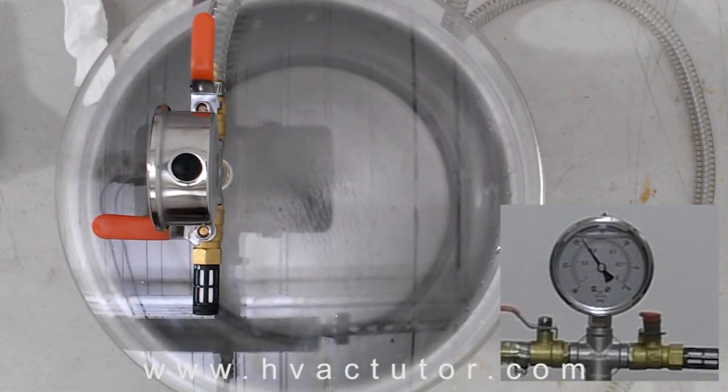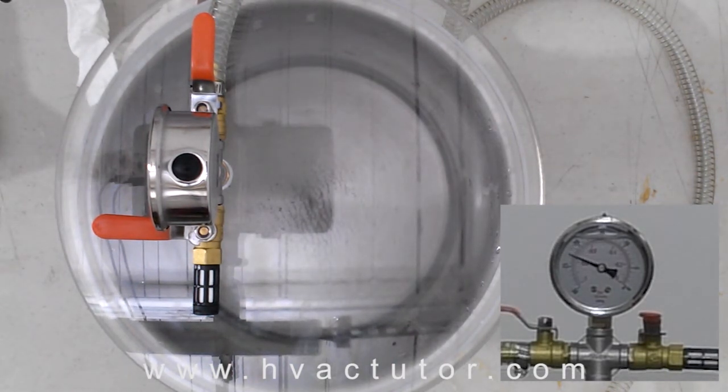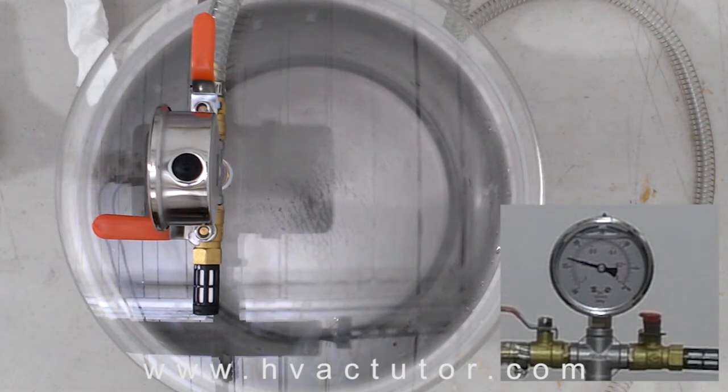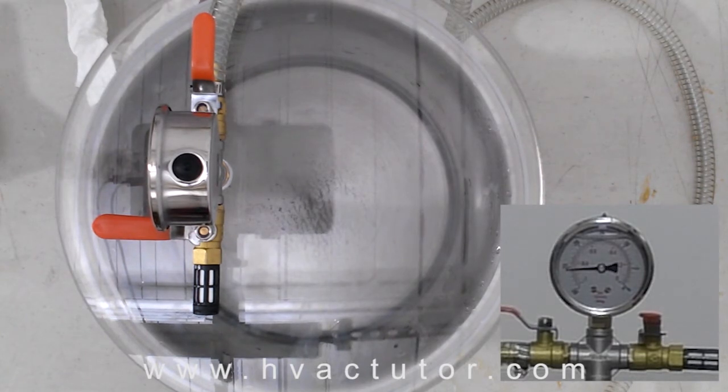So our pressure is going down 20 inches. Now it actually starts to slow down. It started very quickly, but now since there is less vapor on the inside of our vessel, the evacuation of air starts to slow down.